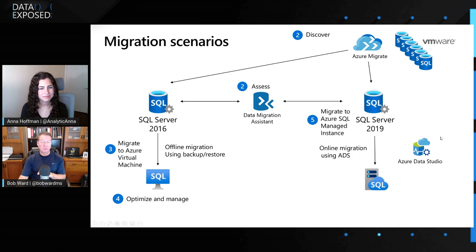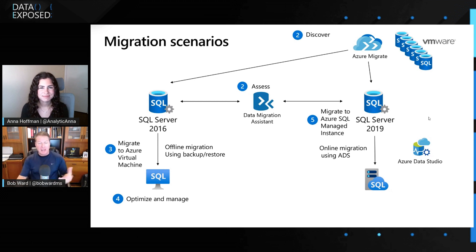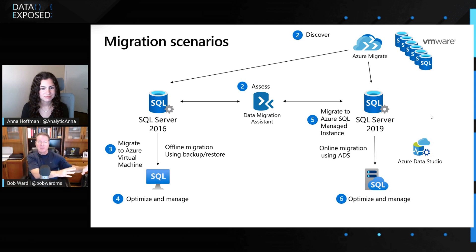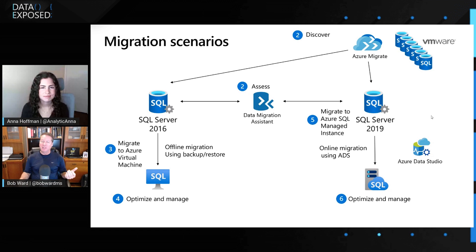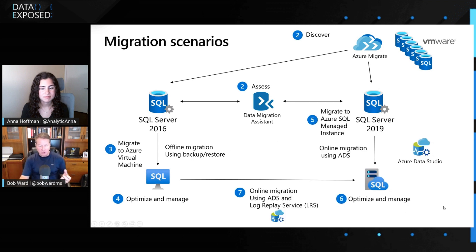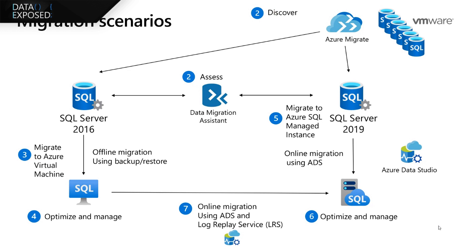On the SQL Server 2019 side, we'll assume that platform as a service is okay for you. Managed Instance could be one of those targets. We'll show you how to do an online migration using Azure Data Studio to do that migration. Then we'll show you how to optimize and manage that. So if you think about these scenarios: SQL Server 2016 where you have to stay there — VM is a great way to get to the cloud; but for SQL Server 2019, maybe an online migration to Managed Instance would be a good choice. And if you're in Virtual Machine but want to go to Managed Instance because your ISV app allows it, the final module shows you exactly that — how to make that shift using Azure Data Studio and Log Replay service.